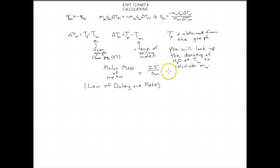Once you do that, you should have an idea of what metal it is. And you're going to also tell me that in the conclusion. In the conclusion for Part A, you're going to give me the specific heat of your metal from the calculation, the molar mass from the Law of Dulong and Petit, and you're going to tell me which metal you think it is.